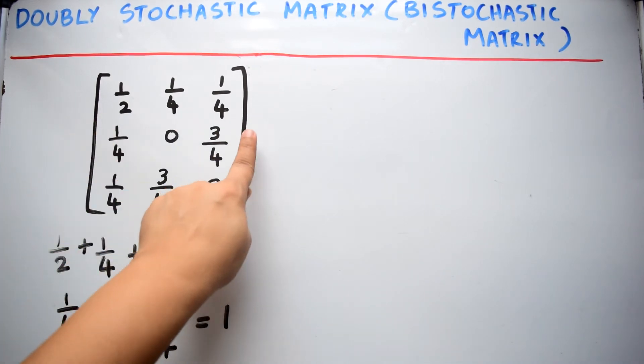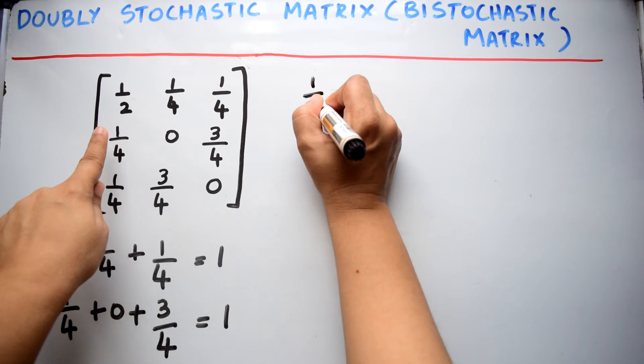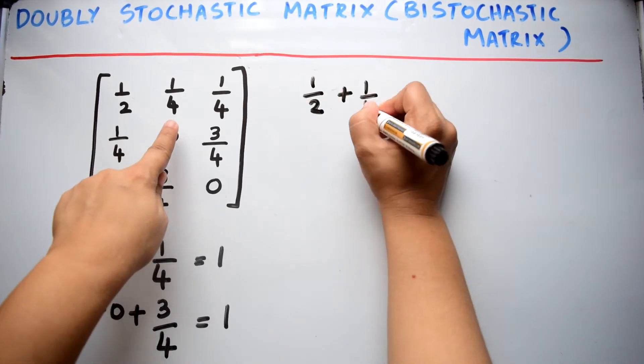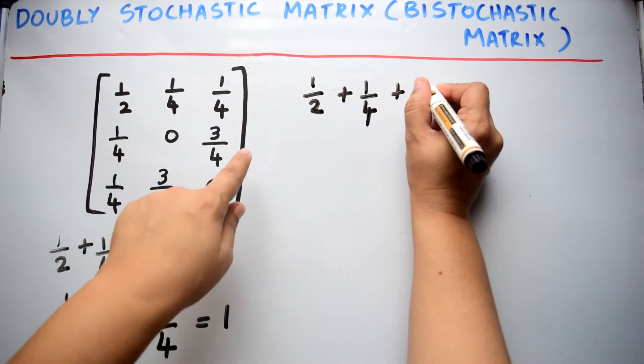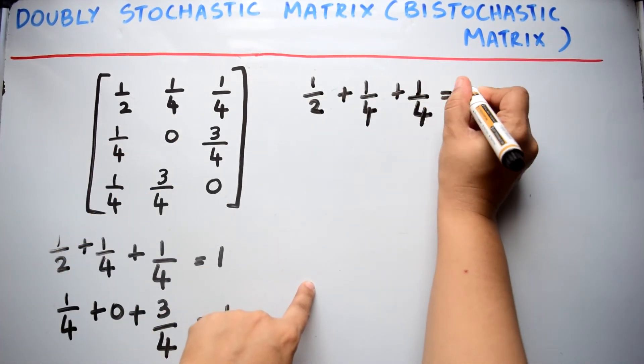Now, consider the first row. If you add 1/2 plus 1/4 plus 1/4, you will get the sum as 1.